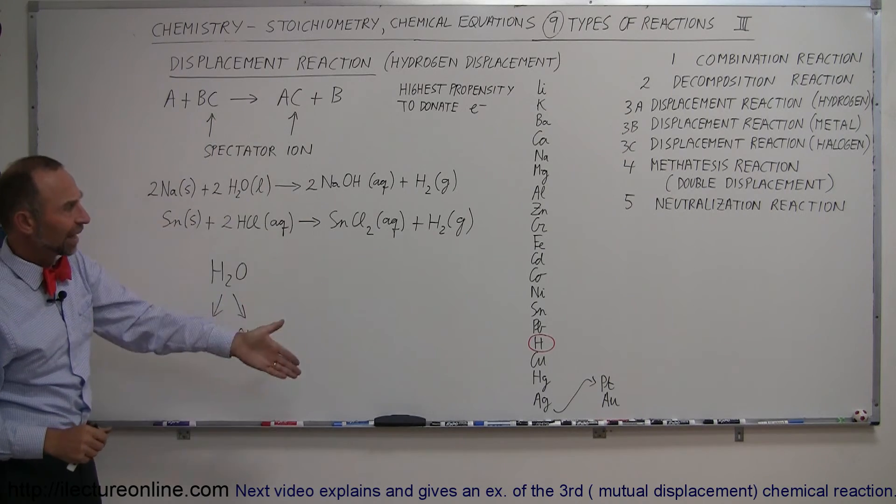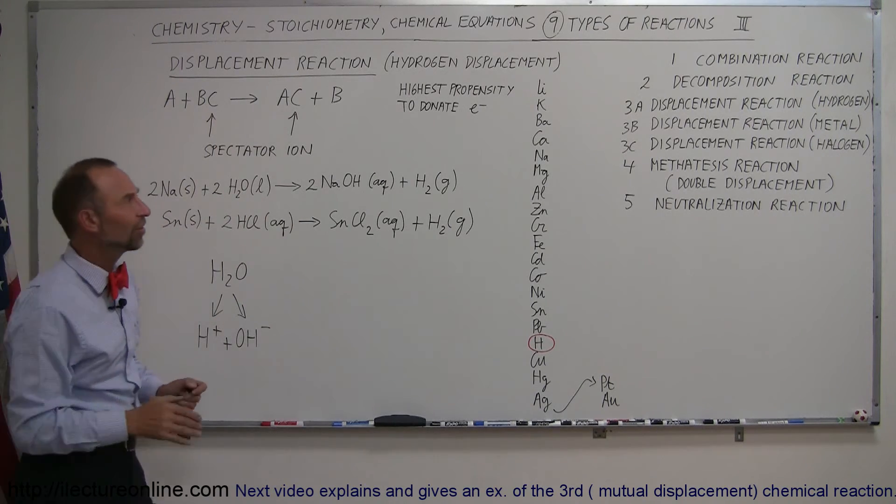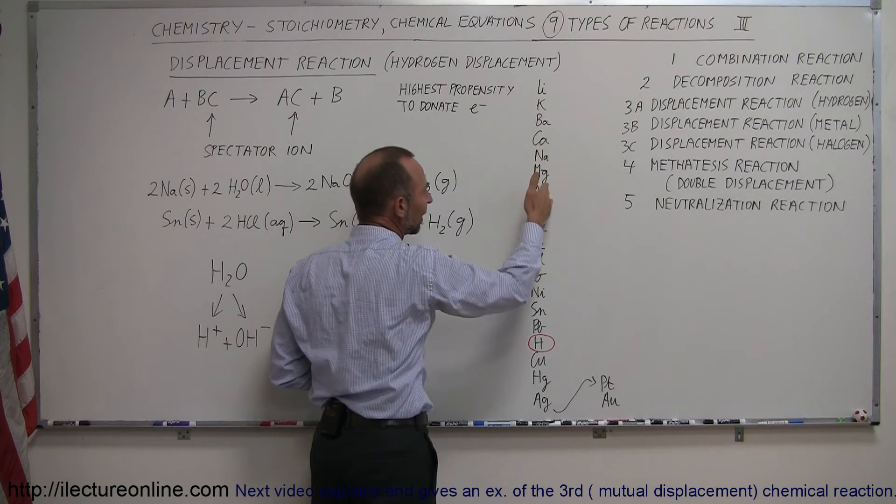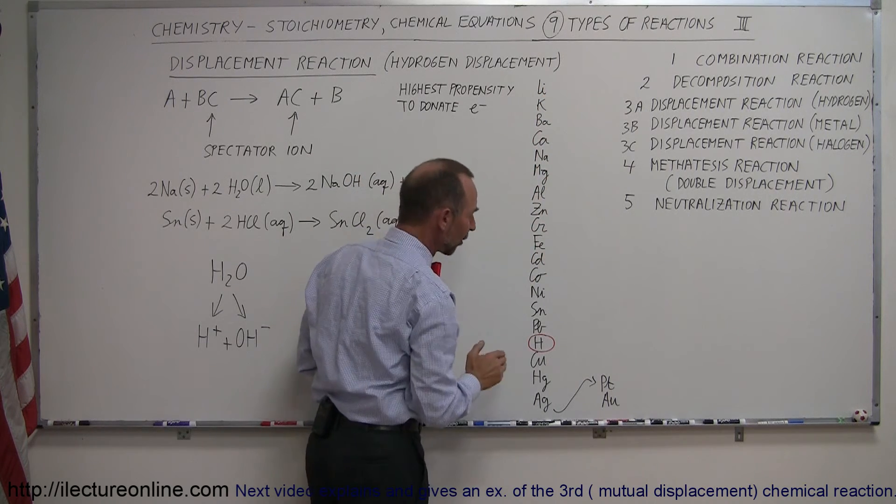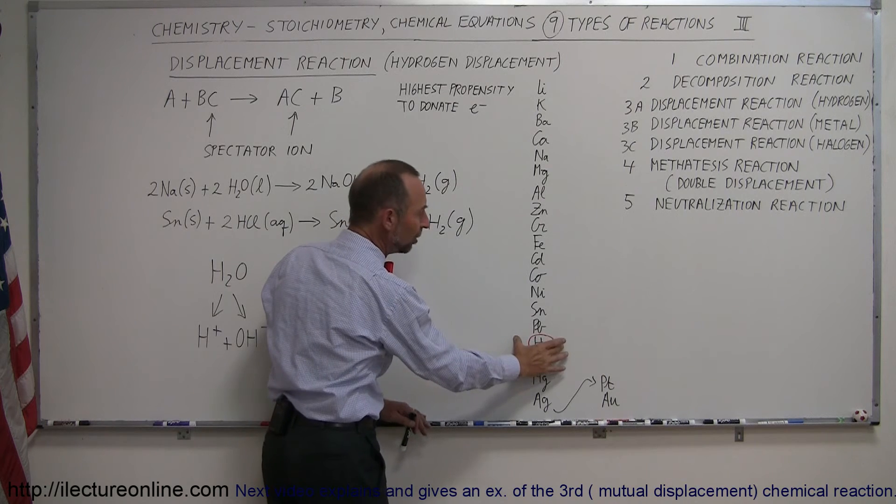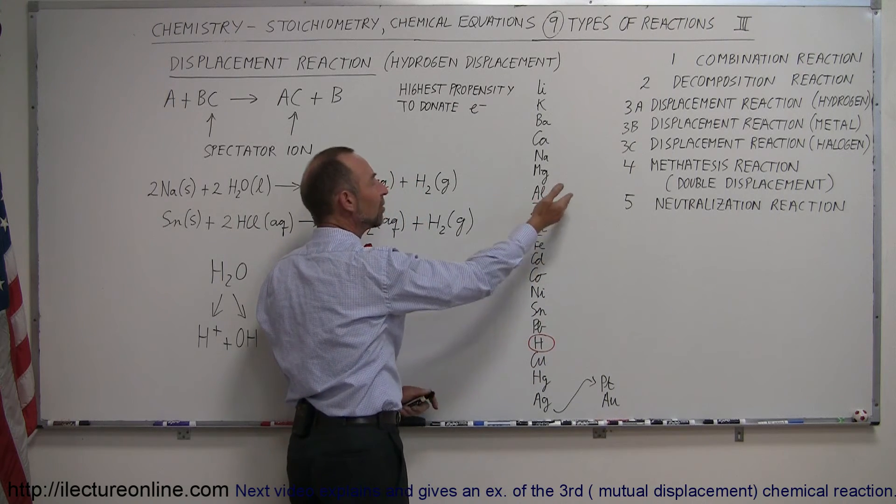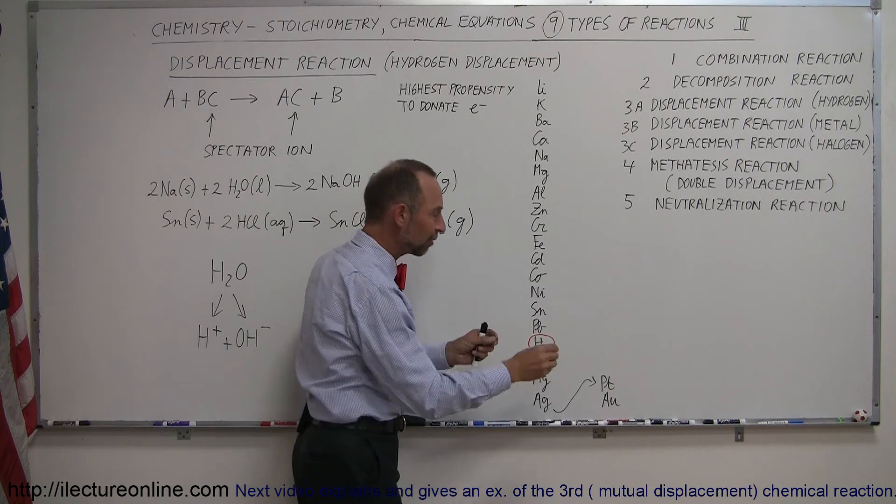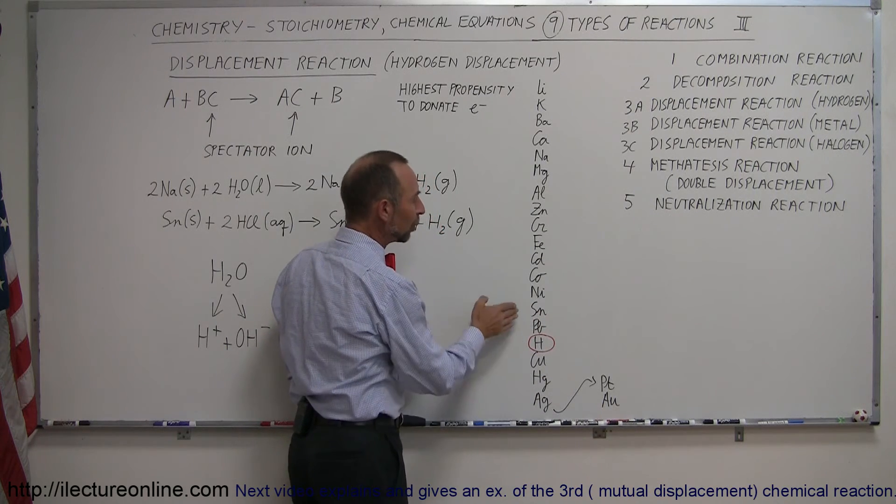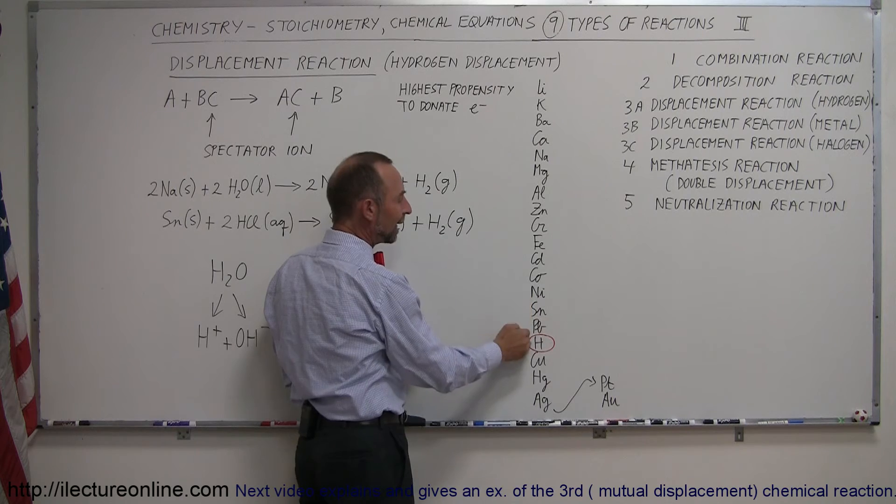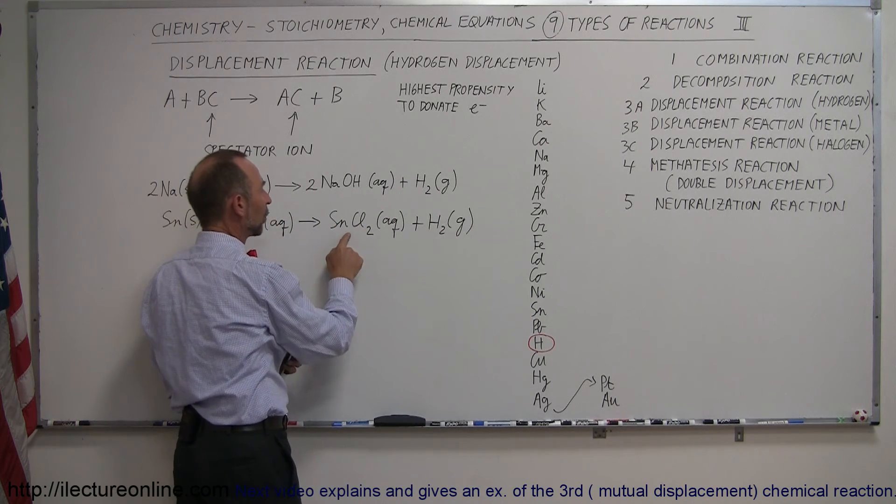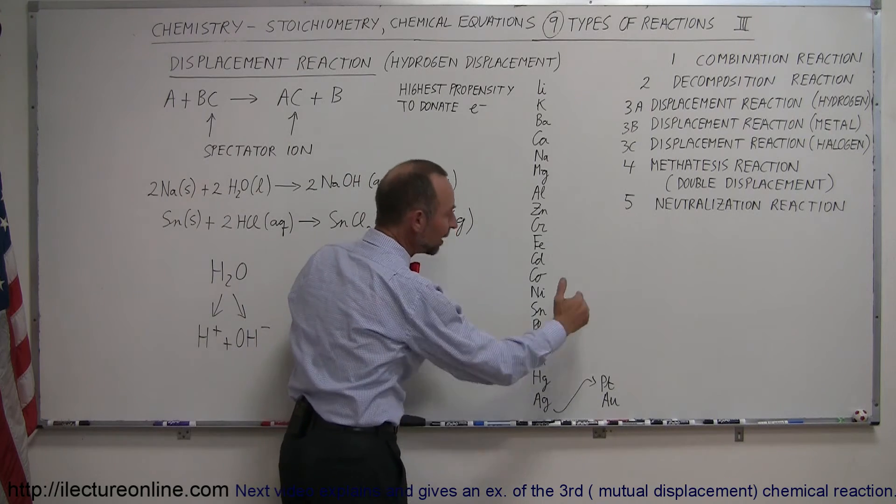So, what is this activity series? What this means is that the elements at the very top are the most likely to donate electrons, and as you go down the list, they're less and less and less likely to donate electrons. But as long as you're above hydrogen, any of these elements placed into an aqueous solution, where hydrogen can be dissociated from the element that is there, it will replace that element, take its place, form a new bond, like here, sodium hydroxide or a tin chloride, and release the hydrogen.